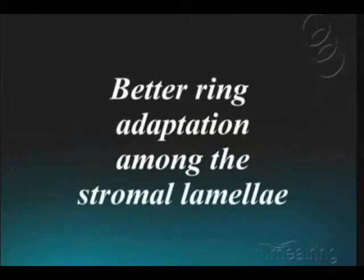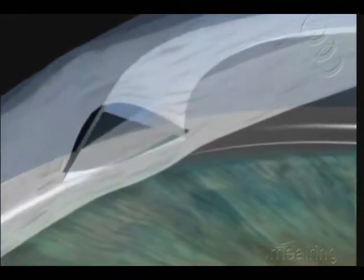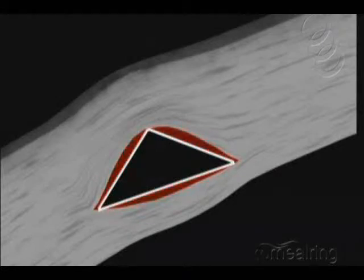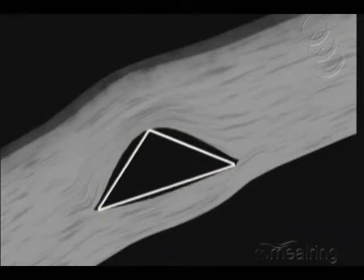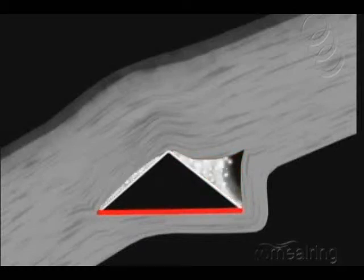Better ring adaptation among the stromal lamellae. The old triangular segments, with their straight lines and angles, allow for the formation of empty adjacent spaces, which contribute to the appearance of undesirable whitish-fat deposits. These spaces get even greater in segments which have a plain base, accumulating much more deposits.